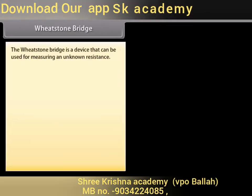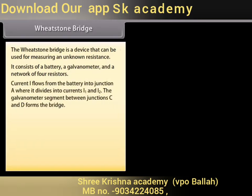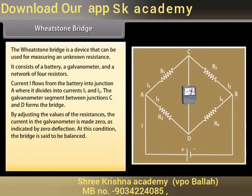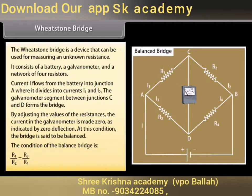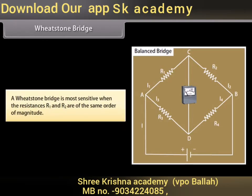Wheatstone Bridge: A device used for measuring an unknown resistance, consisting of a battery, a galvanometer, and a network of four resistors. Current I from the battery divides into I1 and I2 at junction A. The galvanometer connects junctions C and D as the bridge. By adjusting resistances, the galvanometer current is made zero. At this balanced condition, R1/R2 = R3/R4. The bridge is most sensitive when R1 and R2 are of the same order of magnitude.